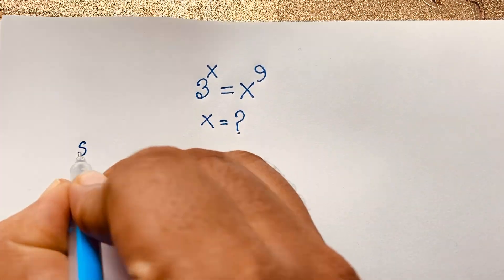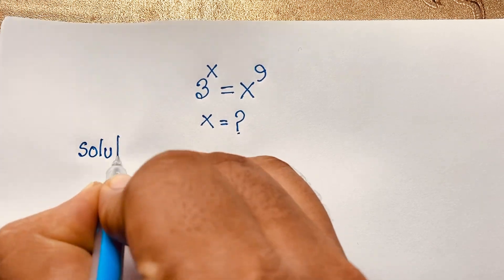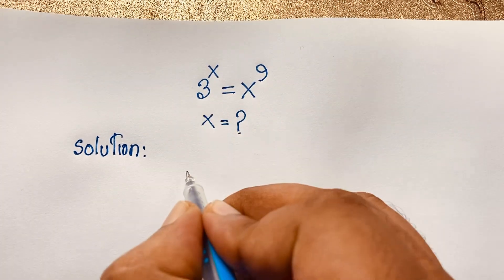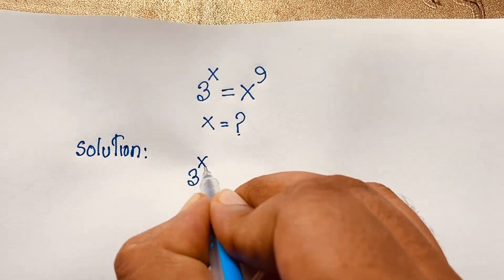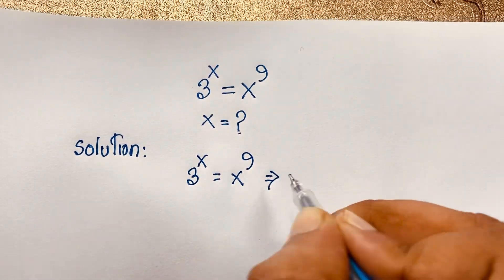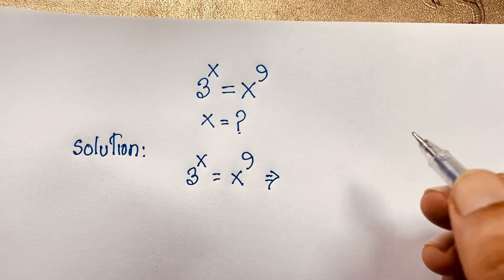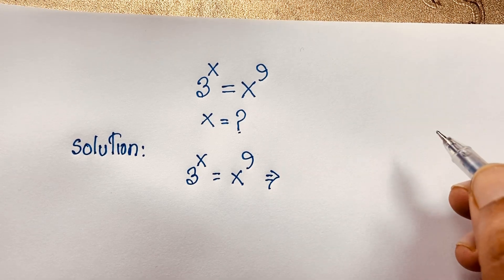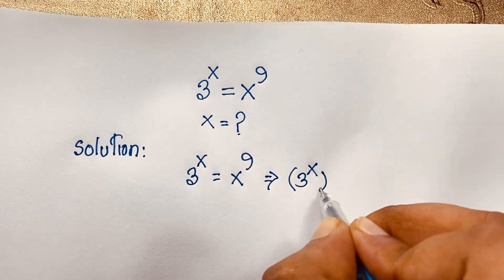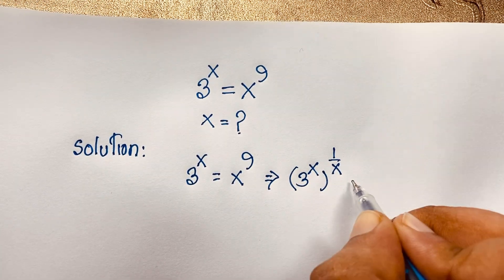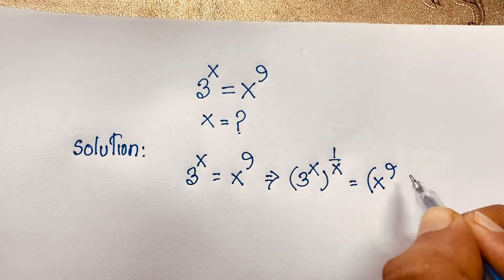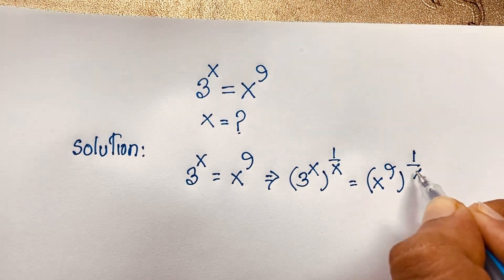I will solve this question using an easy method. Our math solution: 3 to the power x is equal to x to the power 9 — this is our question. Now I apply exponent 1 over x to both sides, so it becomes: 3 to the power x, bracket to the power 1 over x, is equal to x to the power 9, bracket to the power 1 over x.